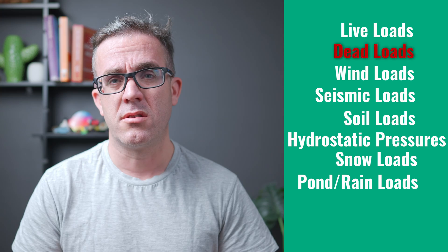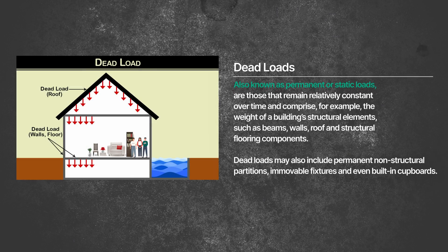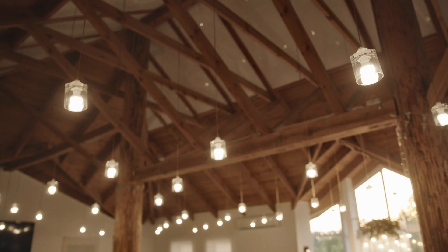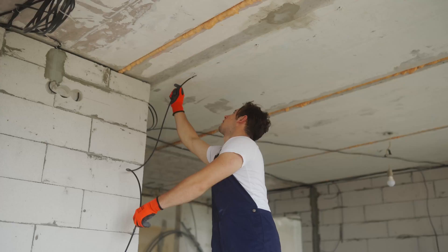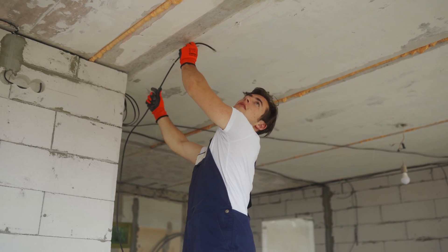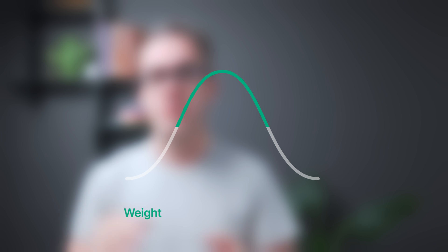Starting with dead loads — these are parts of the structure permanently attached to the building, such as beams, columns, footings, the physical structure itself, finishings, and services permanently fixed to the structure. Anything you can't move in and out. These act in a gravity sense downward and are typically static. Because there's no real variability in where or how they're applied, we have a high confidence in what that load is going to be, so a smaller statistical factor is needed.